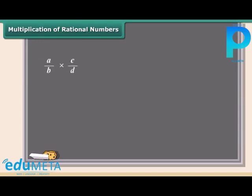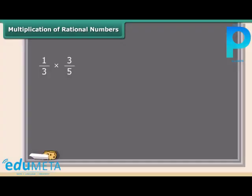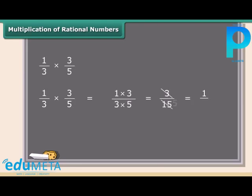Now we will study multiplication of rational numbers. This is the easiest one. To multiply two rational numbers, just multiply the numerators and denominators separately like this. Here is an example. We will multiply 1 by 3 and 3 by 5. First of all, we will multiply the numerators. Now we will multiply the denominators. This fraction can be further simplified to 1 by 5.